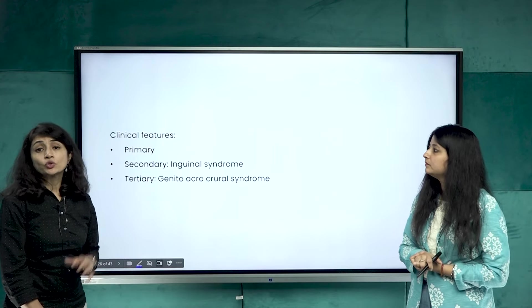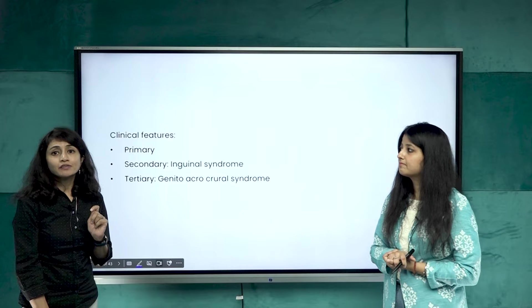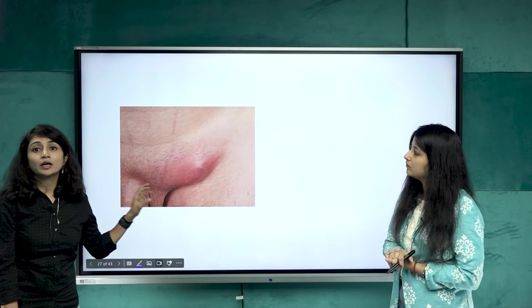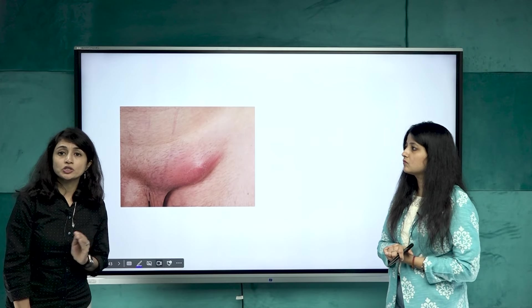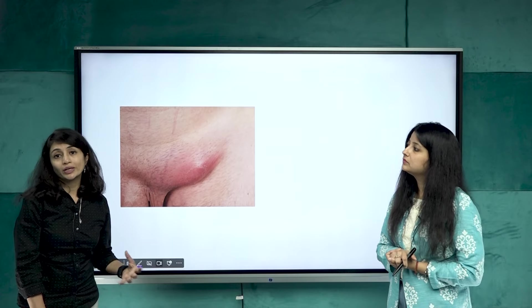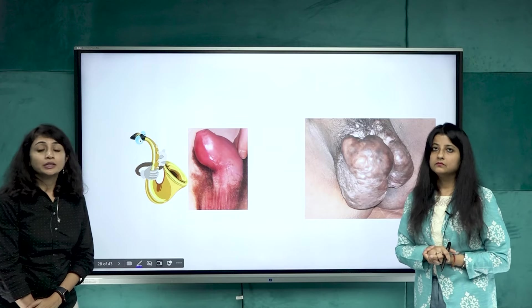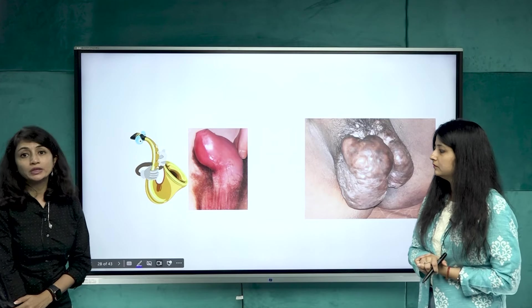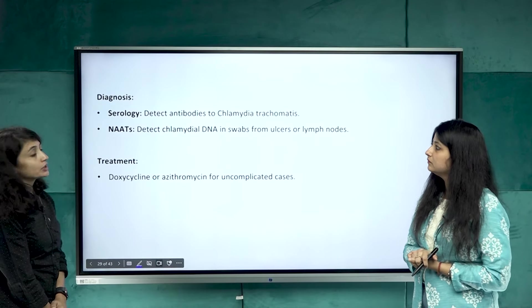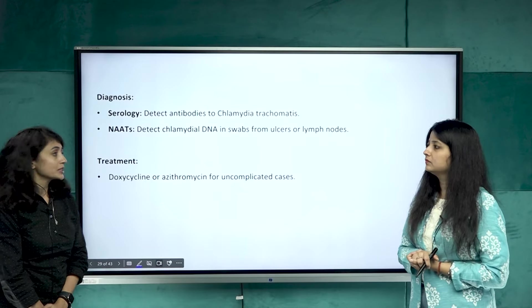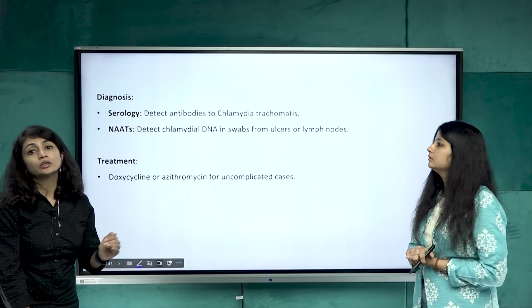An important feature of LGV: though grouped under genital ulcer disease, the ulcer here is transient — patients usually do not present with an ulcer. LGV affects the lymphatic drainage, so patients present with painful inguinal lymphadenopathy called buboes, which are multi-loculated. Patients may limp while walking due to painful swelling in the inguinal or femoral area. If untreated, it can lead to lymphatic complications like saxophone penis in males and esthiomene in females.